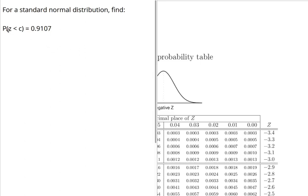For a standard normal distribution, find the probability that z is less than some number c equals 0.9107.